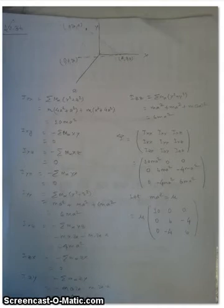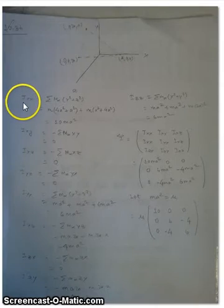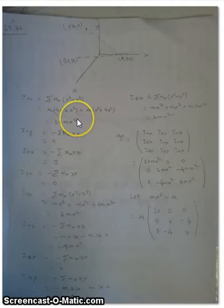So, in order to do that, at first I need to find the inertia tensor of this system. The inertia tensor for this system can be found using these formulas. For the Ixx component, it's the summation of all mass elements times y squared plus z squared, and then I find 10ma squared. Similarly, the Ixy component would be 0 and Ixz component would be 0.